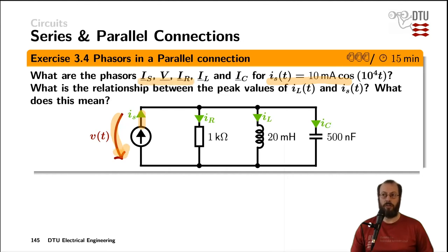Again, you are asked for all the phasors in the diagram. What is the relationship between the peak values of the inductor current and the source current, and what's the meaning of that relation?